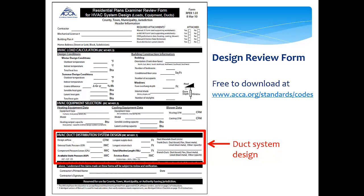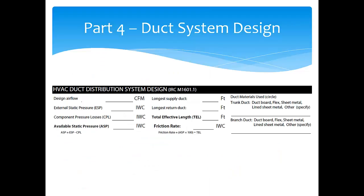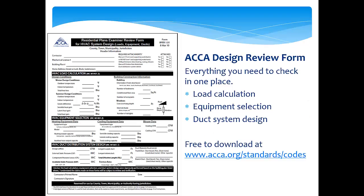The duct sizing portion of the design review form has a place for all six verification points: design airflow, external static pressure, sum of component losses, available static pressure, total effective length of the longest system path, and the calculated friction rate. The designer can also specify the duct material used. This form is available to you for free — just visit ACCA's codes page at acca.org/standards/codes.